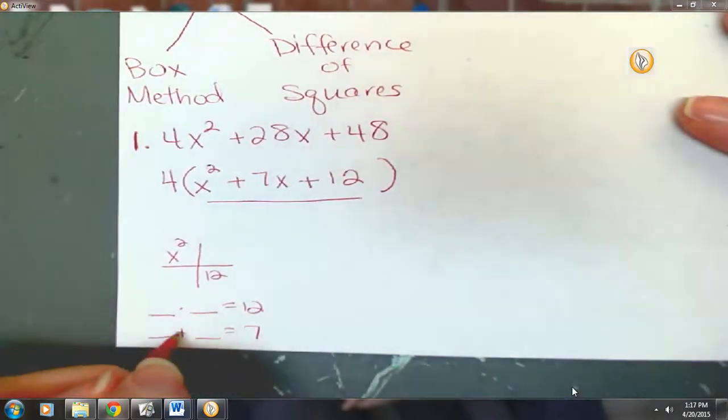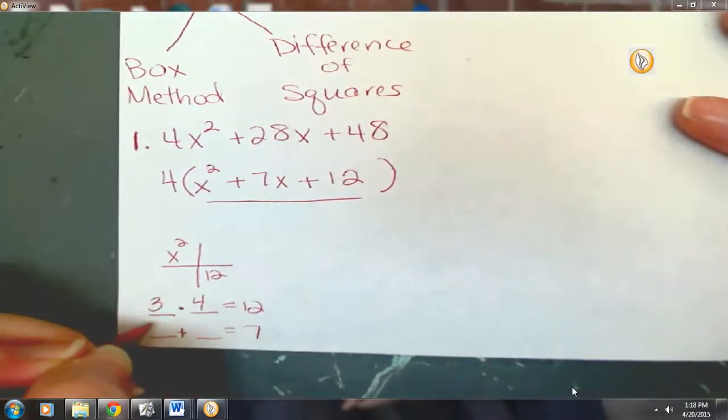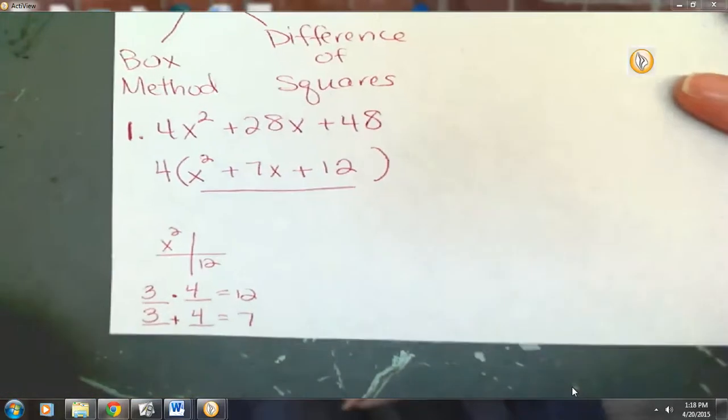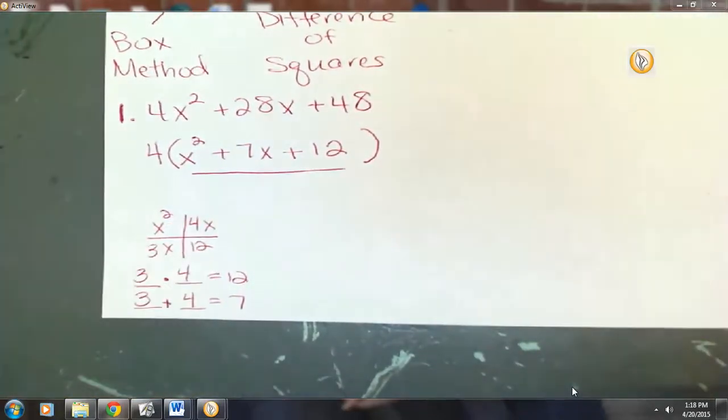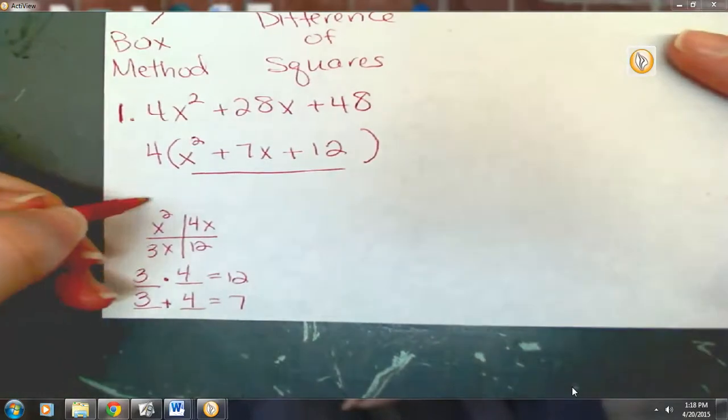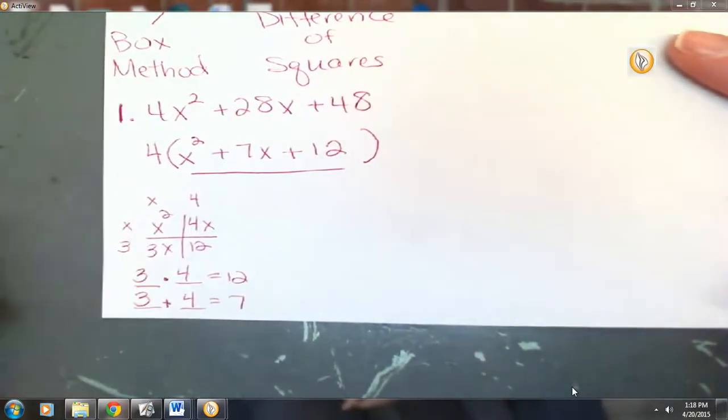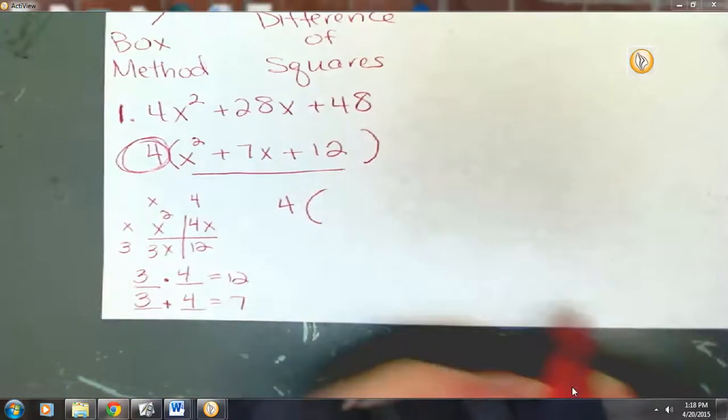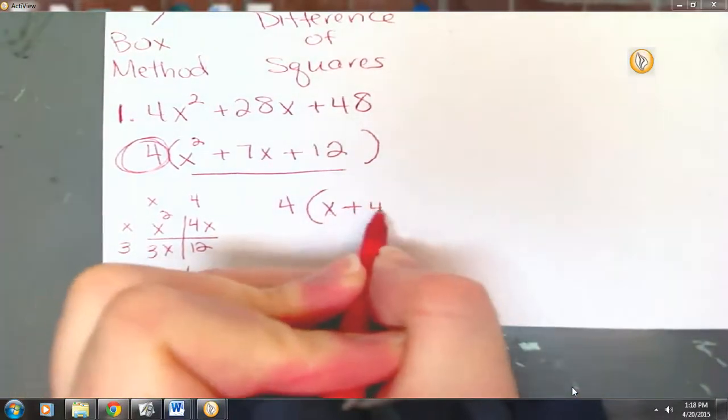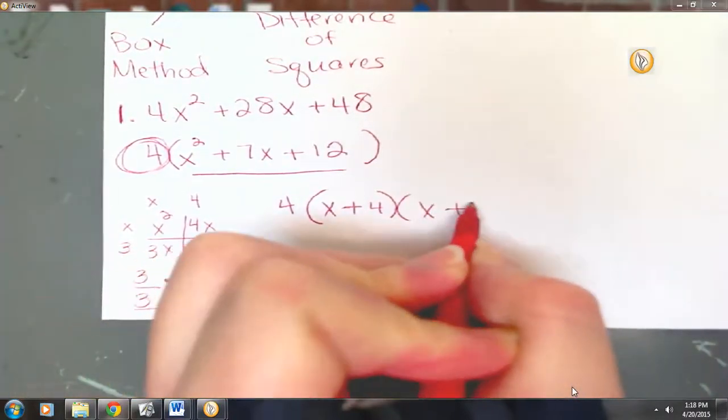What two numbers are we looking at? 3 and 4. 3 and 4. 3 times 4 is 12. 3 plus 4 is 7. All right. Now, we've got our numbers in our box. You guys should be able to do greatest common factor for each row and column. When we write our factored answer, I am, of course, going to bring down that 4 that I factored out at the beginning. And then we'll have x plus 4, x plus 3.